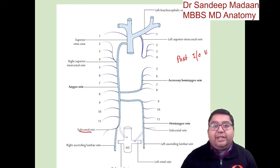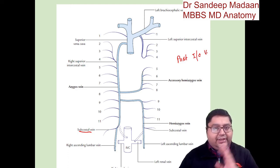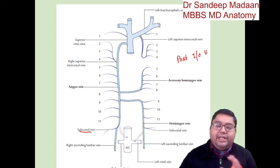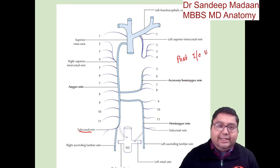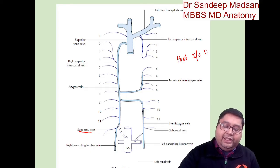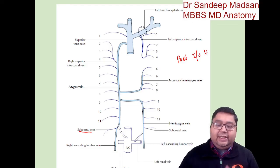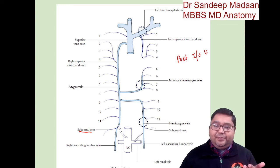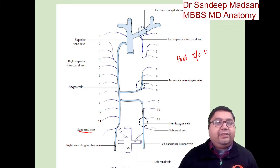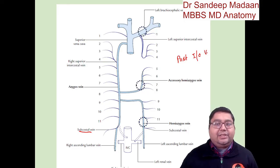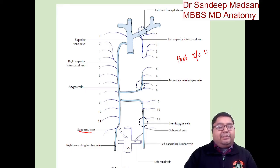The first vein on both right and left sides drains into the brachiocephalic. After that, on the right side, all remaining veins drain into the azygous. On the left side there are three drainage areas: brachiocephalic, accessory hemi-azygous, and hemi-azygous. Total veins are 12 and areas are 3, so dividing 12 by 3 gives four veins each. Veins 1–4 drain into brachiocephalic, veins 5–8 into accessory hemi-azygous, and the last four into hemi-azygous.